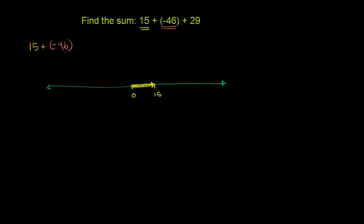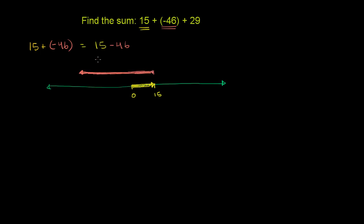We're adding negative 46 to that 15. That is the same thing — this is equivalent to 15 minus 46, which means we are going to move 46 spots to the left of 15. A negative sign or minus means we're moving to the left on the number line. So we're going to move 46 to the left. The length of this arrow right here is going to be 46, and we're moving to the left. This is the negative 46 that we're adding to the 15.